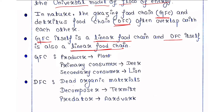In the GFC, the producer is plant and the primary consumer is deer because deer eat plants. The secondary consumer is lion because lions eat deer.